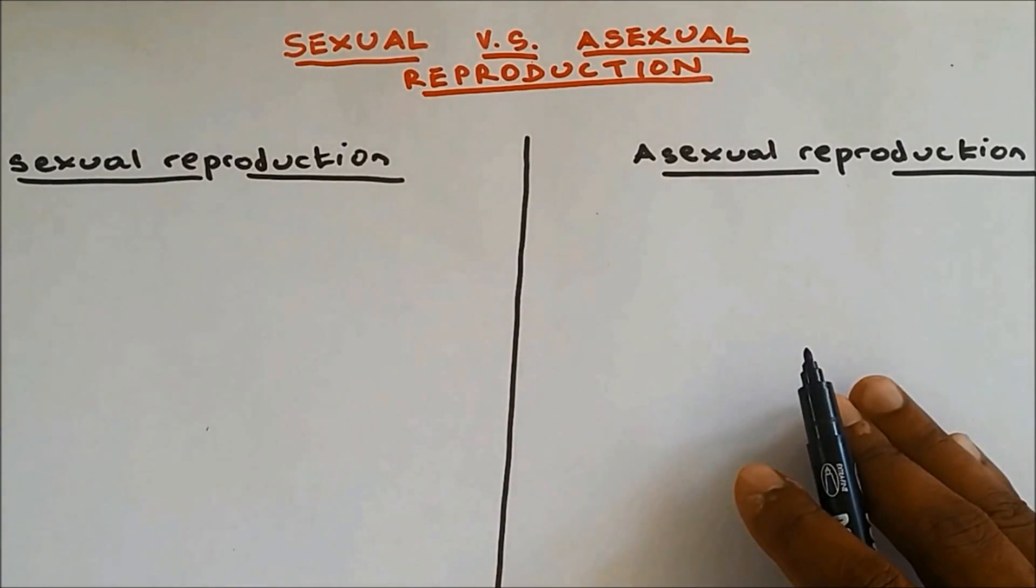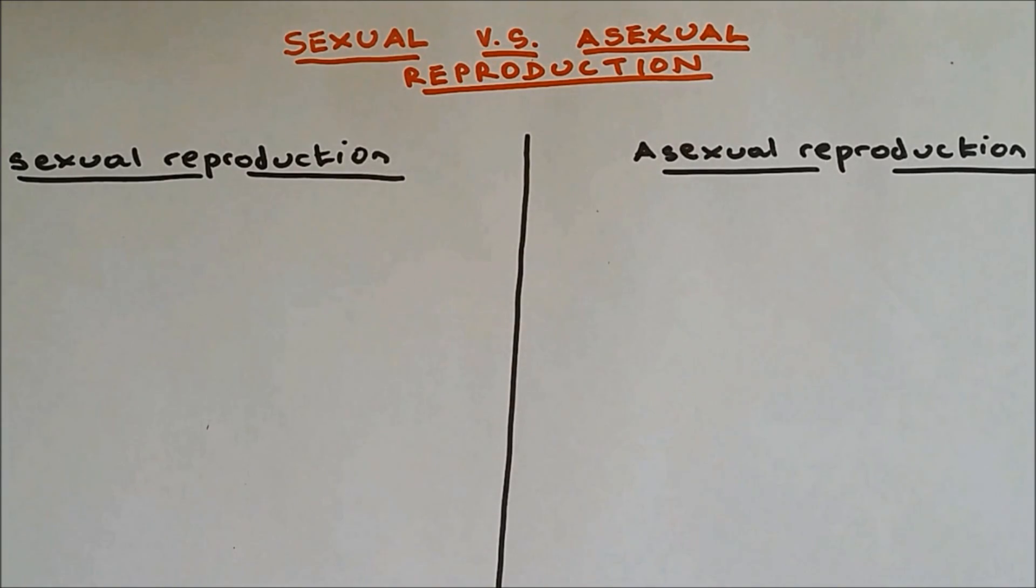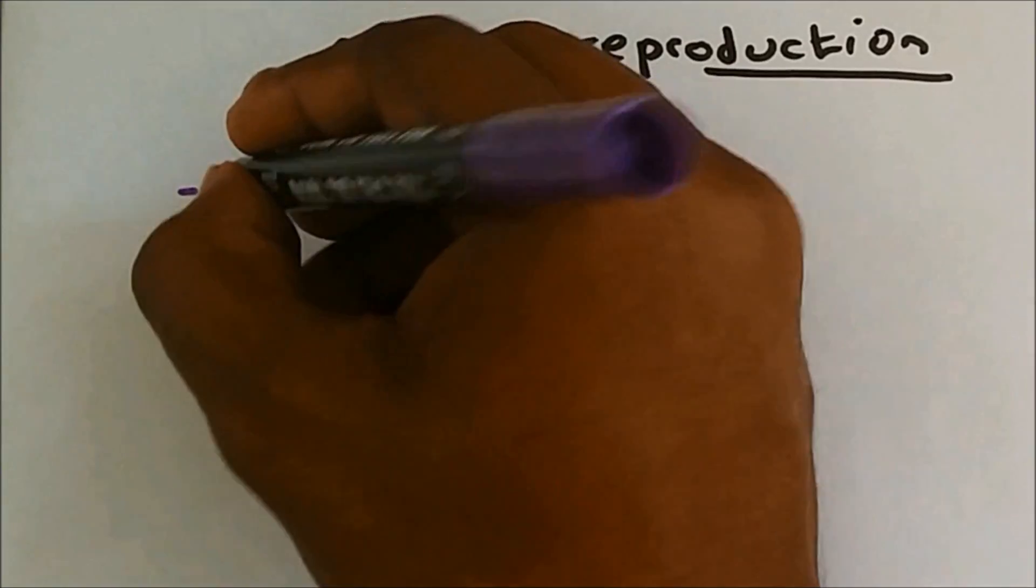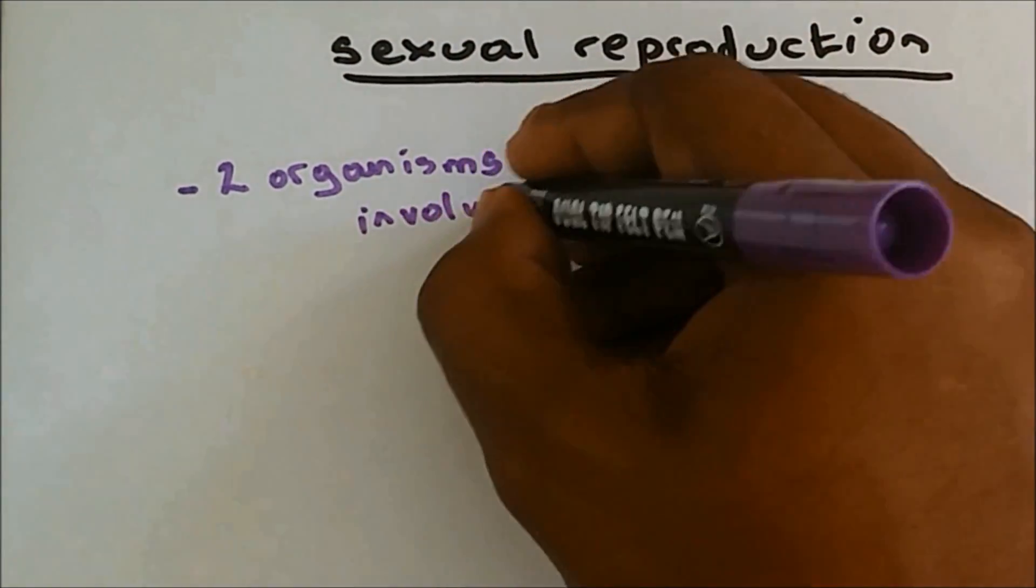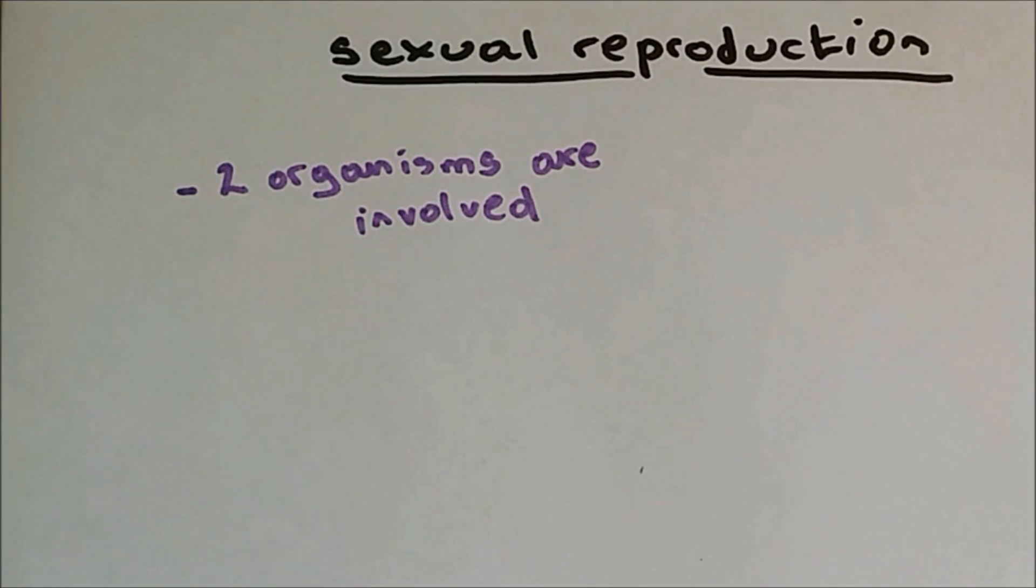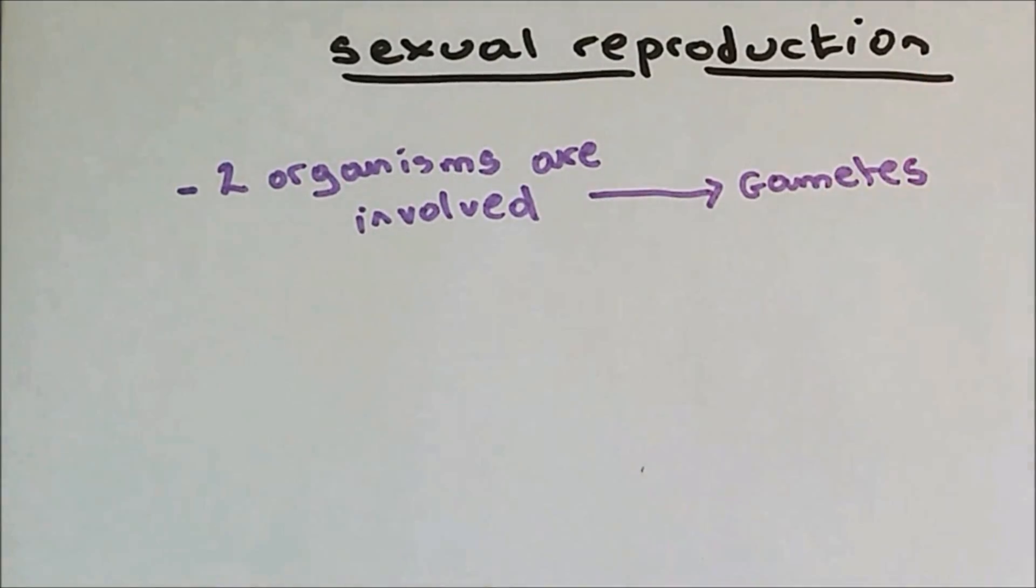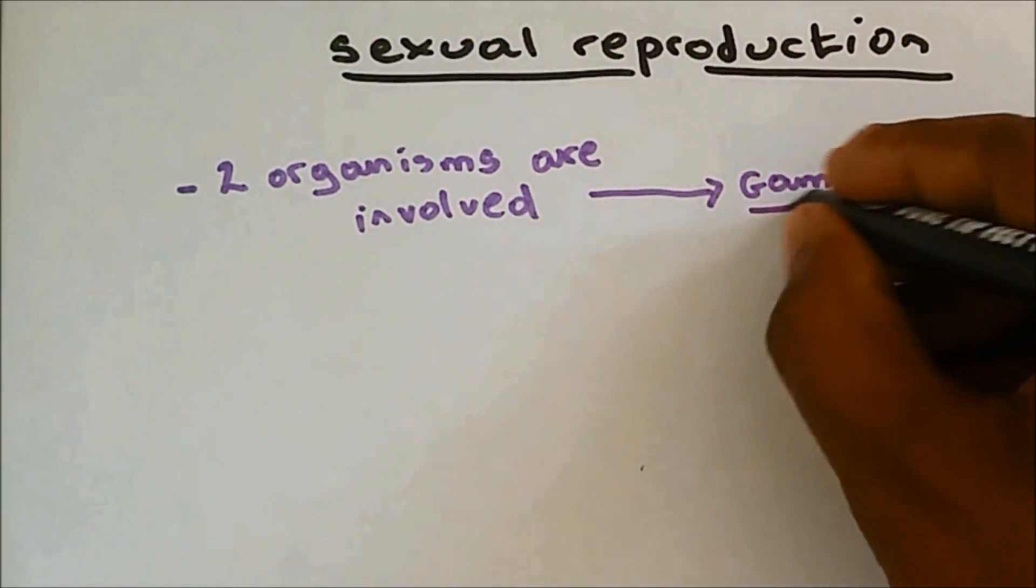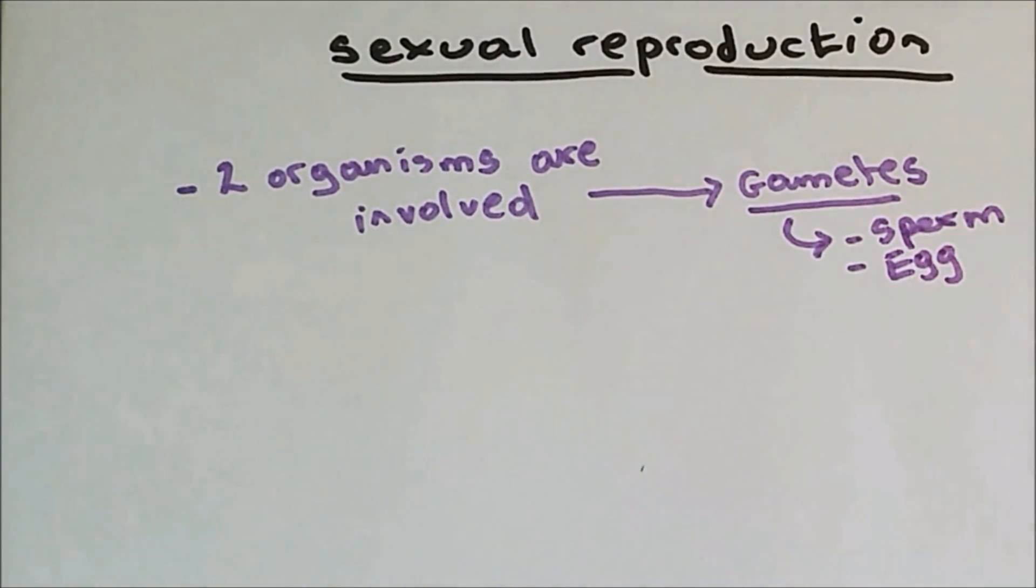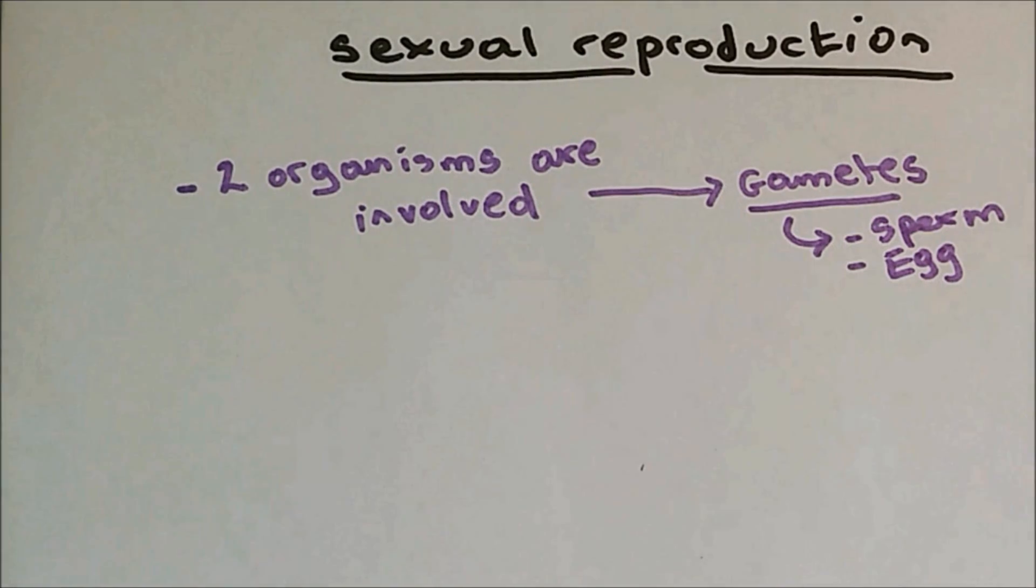On this side I'm going to describe sexual reproduction, and this side I'm going to describe asexual reproduction. In sexual reproduction, two organisms are involved. These two organisms will produce gametes. Sperm and eggs are called gametes. Sexual reproduction happens in mammals, and sperm and egg undergo fertilization.